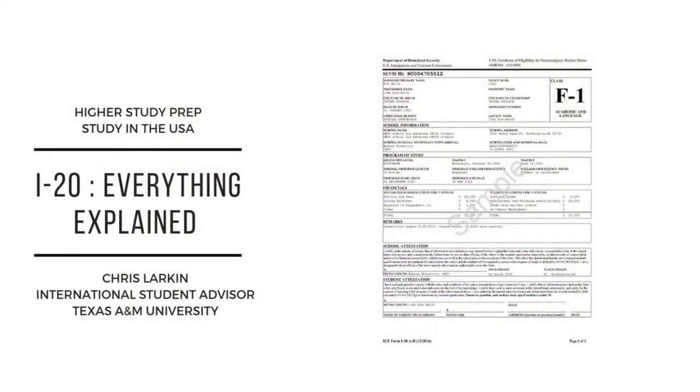Welcome. I'm going to be explaining some common questions that you might have as an international student and also what I do on a daily basis, and hopefully I can help you out. So the first question is: what is an I-20? The I-20 is also known as a Certificate of Eligibility, which tells immigration officers that you are eligible to study at Texas A&M University.